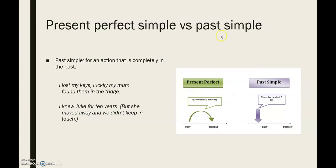Now, the present perfect simple versus the past simple. We use the past simple for an action that is completely in the past — it's over now. For example with the keys: 'I lost my keys, but luckily my mum found them in the fridge' — meaning I've got them again, there is no influence in the present anymore. Or with Julie: 'I knew Julie for 10 years, but she moved away and we didn't keep in touch' — so I don't know her anymore, no influence in the present. You can see it quite well presented here: the present perfect has influence today, or something happened in the past and stayed in the past — it's over, no influence.